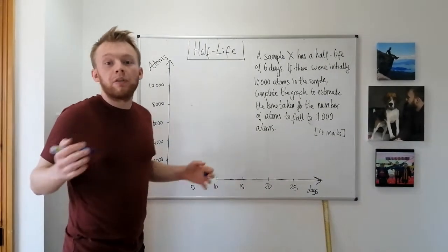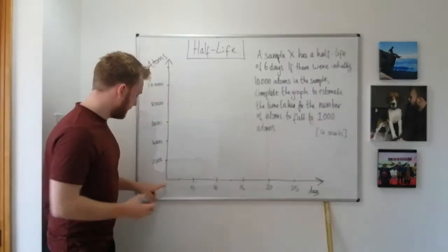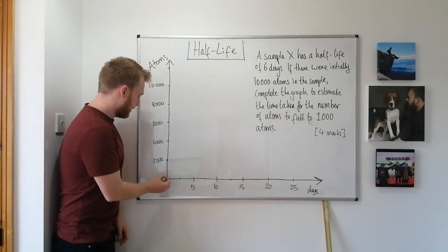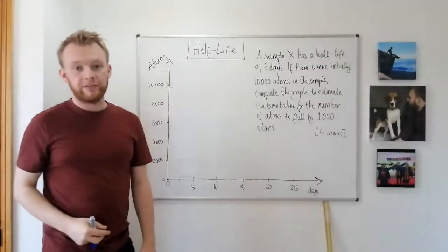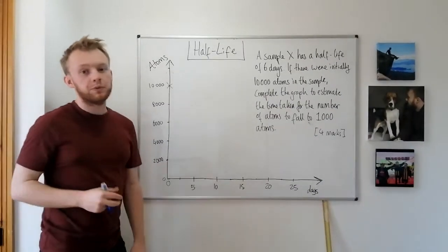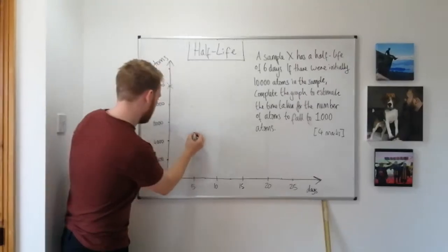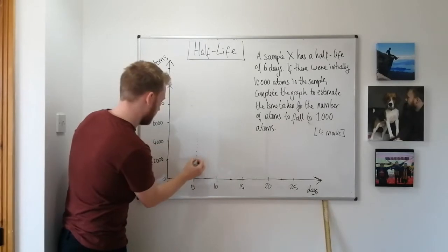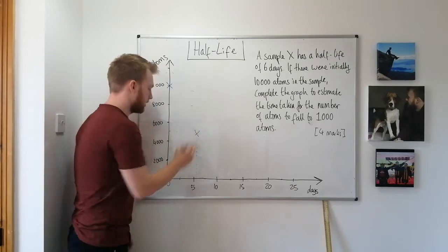First, we need to plot the data we know. Initially there were 10,000 atoms, so after zero days, 10,000 atoms. One half-life is six days, so after six days the number of atoms would have halved — fallen to 5,000. Let's plot that at six days, around 5,000.